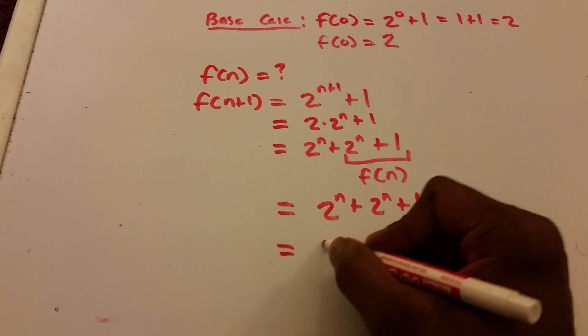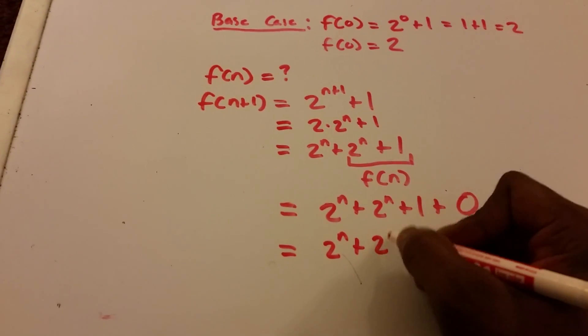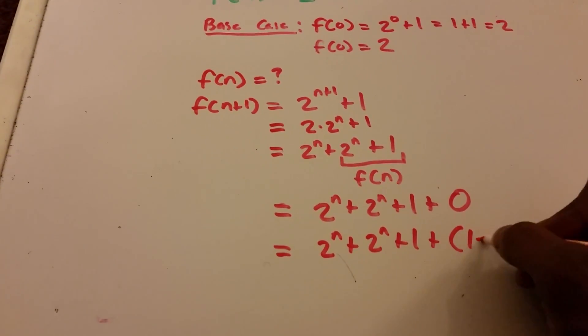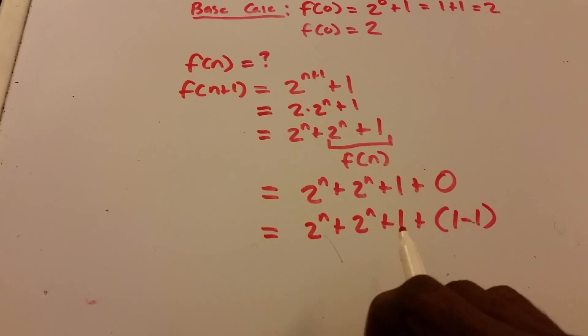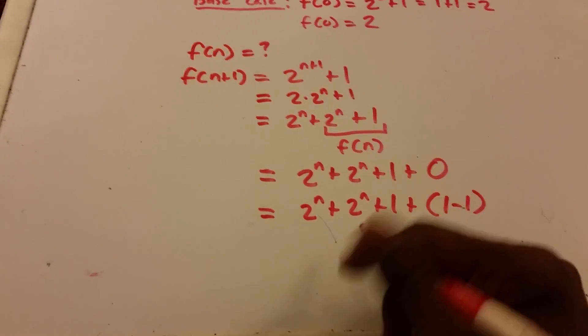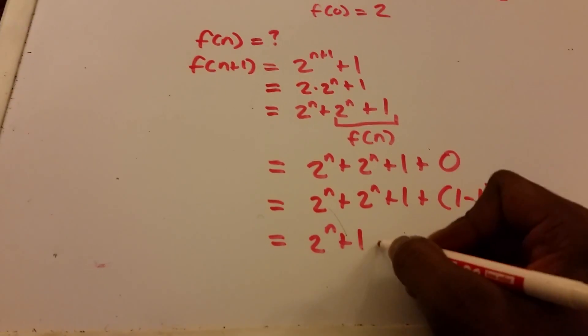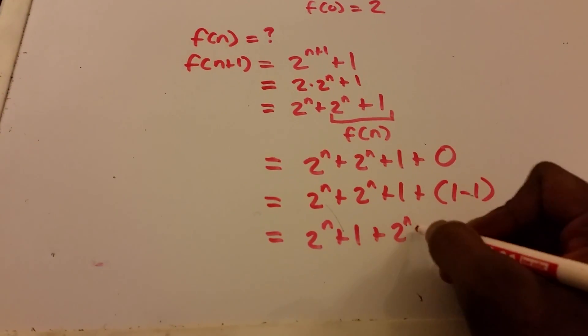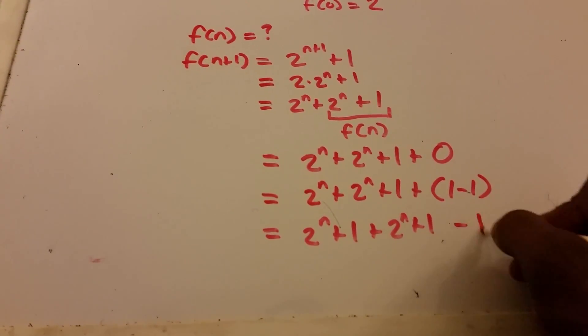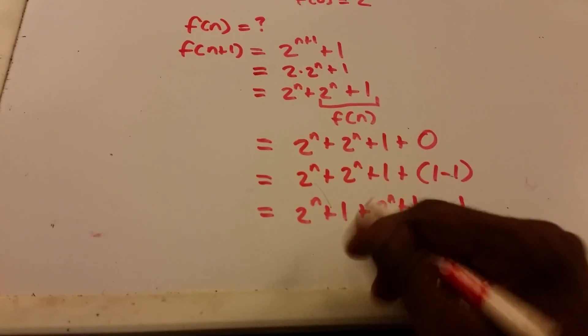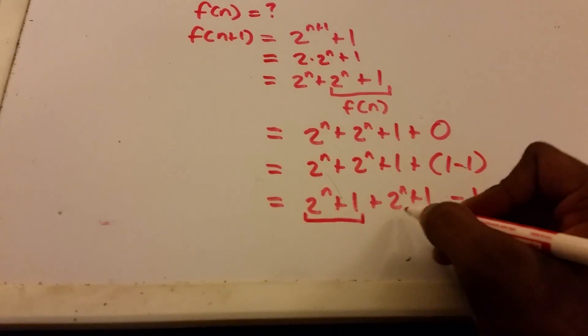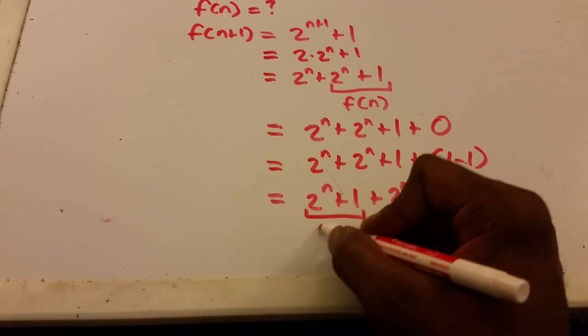And we can say 2^n + 2^n + 1 + 1 - 1, and this is 2^n + 1 + 2^n + 1 - 1. And now we have our function of n here.